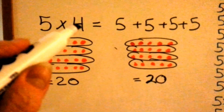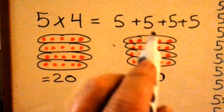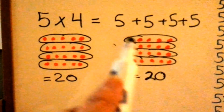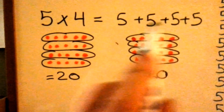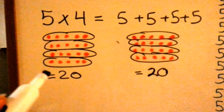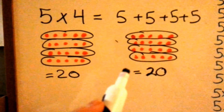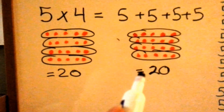5 times 4 is equal to 5 plus 5 plus 5 plus 5. We have 4 of them, see? 5 times 4 is 20, and 5 plus 5 plus 5 plus 5 is 20.